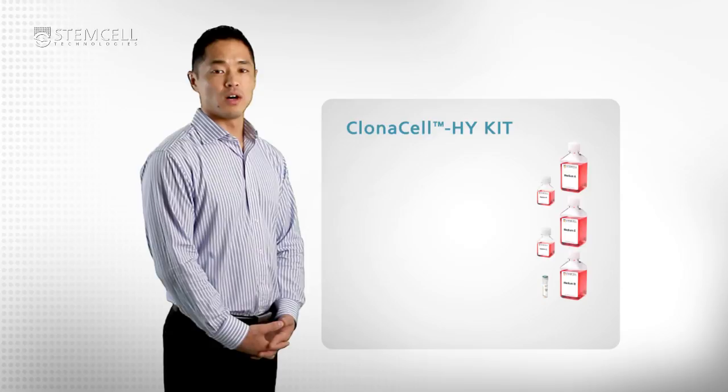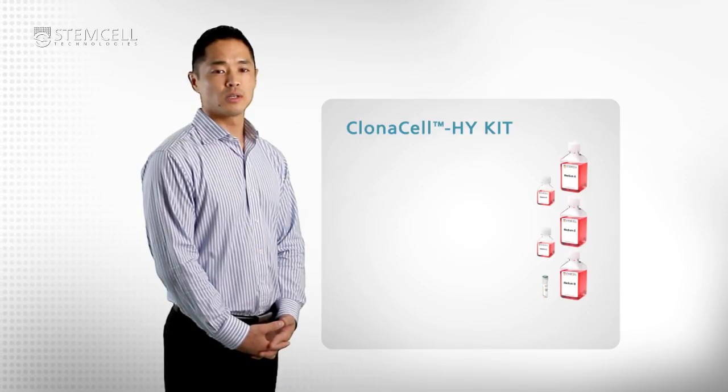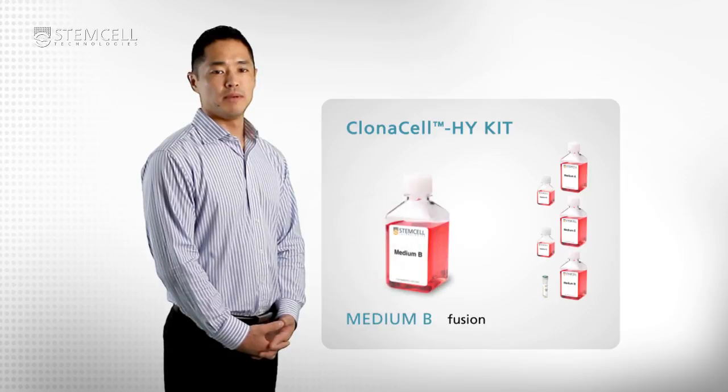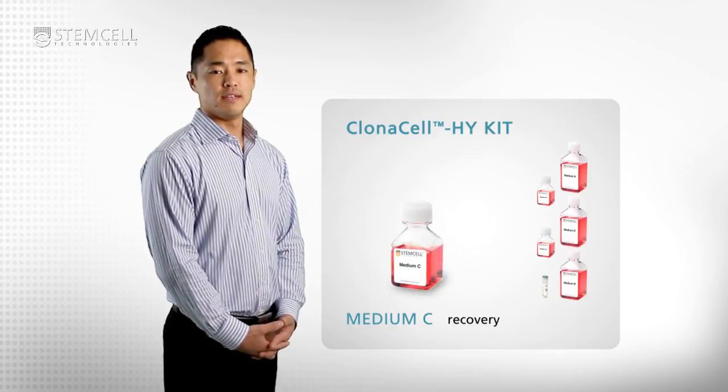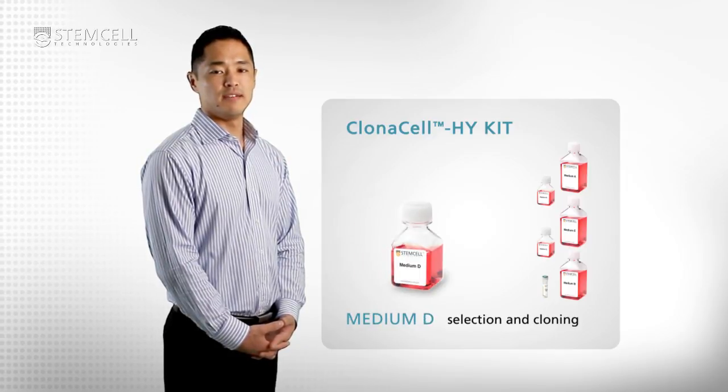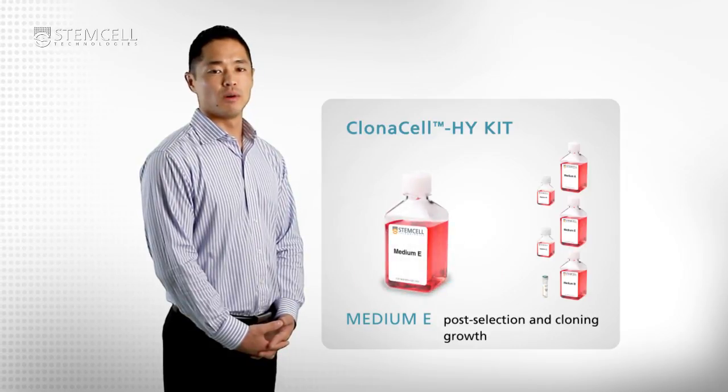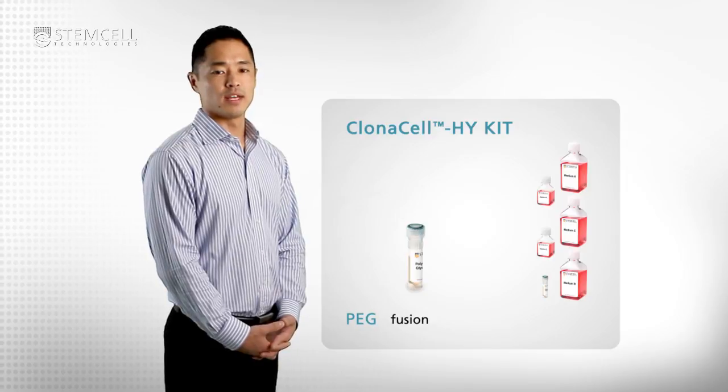The Clonacell HY kit includes all components for the development of monoclonal antibodies: Medium A for pre-fusion culture, medium B for fusion, medium C for recovery, medium D for selection and cloning, medium E for post-selection and cloning growth, and polyethylene glycol or PEG for the fusion step.